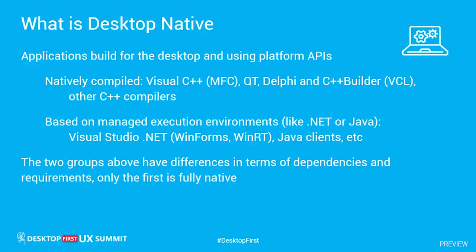Now there are two flavors. One is the truly native and compiled application that does not need an execution environment. Good examples include Visual C++ with MFC, Qt is another example, and Delphi and C++ Builder using the Visual Component Library. There are other C++ compilers and other tools — ultimately you can even call the native APIs directly, but that is clearly very low level and tedious.